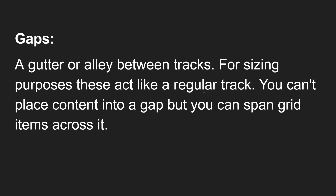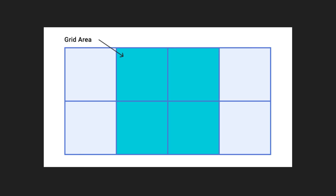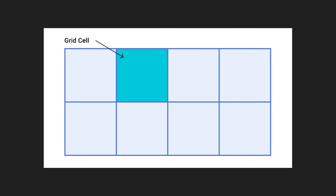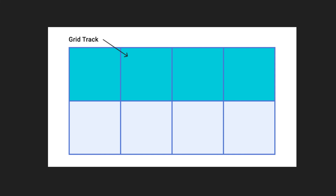For sizing purposes, gaps act like regular tracks, but you cannot place content into a gap — however, you can span grid items across it. You can have a column gap or a row gap, collectively called a grid gap. So to recap: grid gap is the space between two grid tracks; grid area is formed by combining multiple tracks; grid cell is the smallest portion; grid track is the space between two adjacent row or column lines; and grid line is the structural line itself.